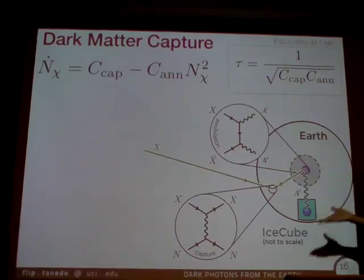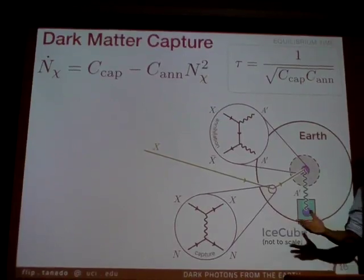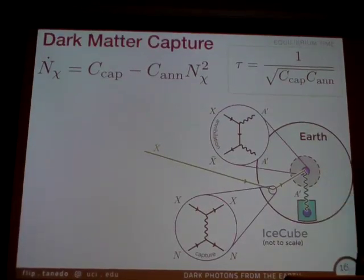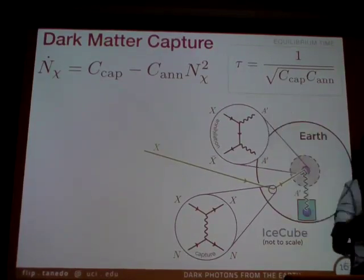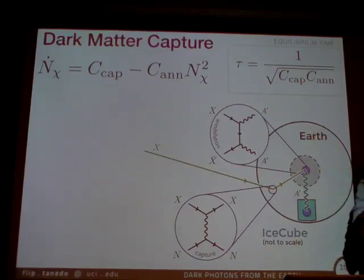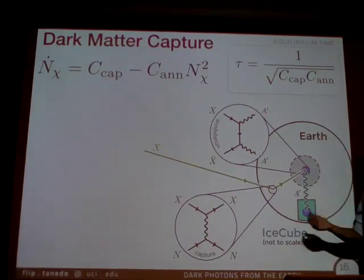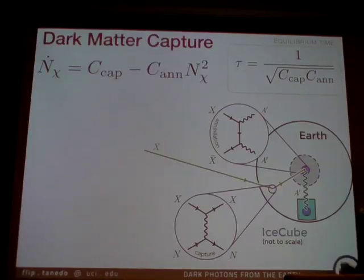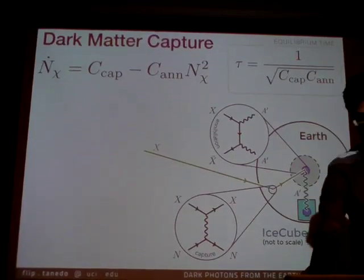Here's where the new part comes in. Until fairly recently, the common lore was that the Earth is never, ever in equilibrium. The capture rate is fairly large — we have the whole volume of the Earth — but the annihilation rate was just too small. You take your favorite neutralino in the MSSM and say, this annihilation cross-section, even though I have this capture rate, they just don't annihilate enough. We're just never in equilibrium. That was a bummer. But now, by hook or by crook, we're in this era where we're thinking about light mediators, and something changes.